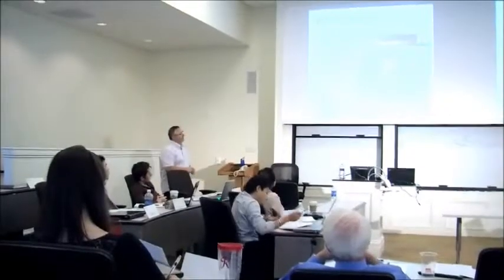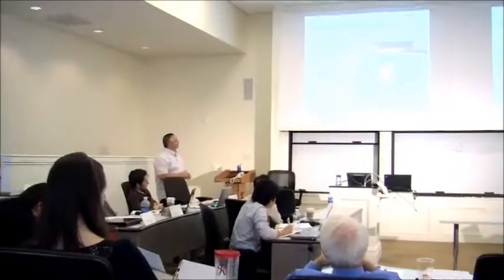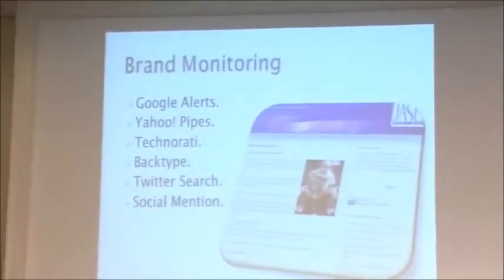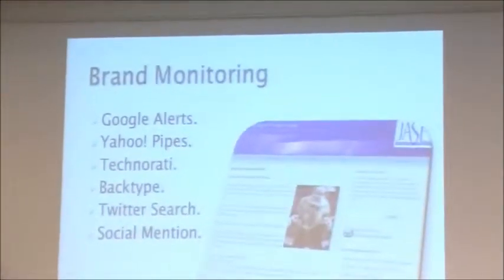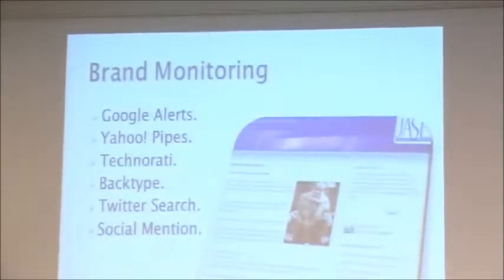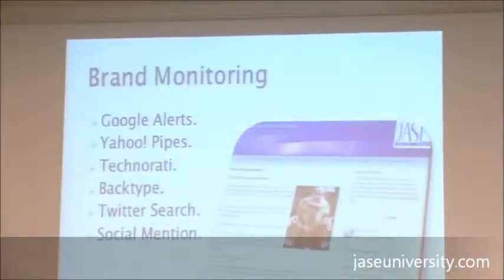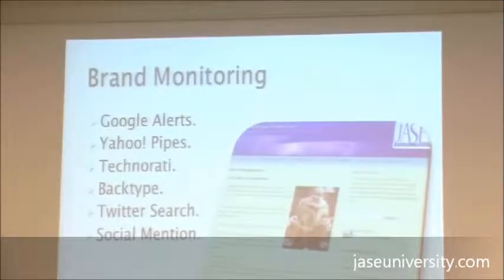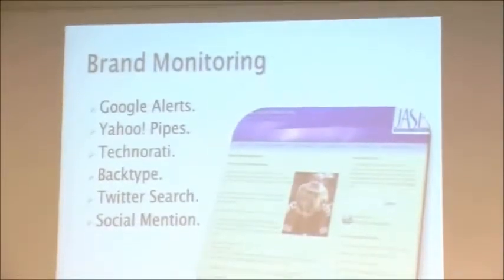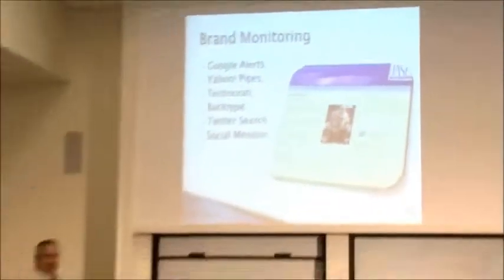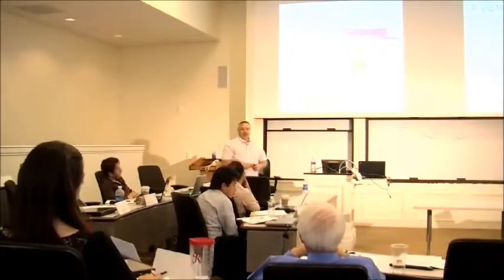Brand monitoring — we talked about that. There are tons of ways to do this, both offline and online. Google Alerts is a great one. Yahoo Pipes, Technorati. BackType is a great conversation tool for blogs — it will take comments off of Twitter and Facebook talking about your blog article and bring them all into the comments section on your blog, so all comments from all those communities are back in one place. Twitter search and Social Mention work similarly to Google Alerts — when your name is mentioned on Twitter, Facebook, or whatever term you put in, they'll notify you right away.